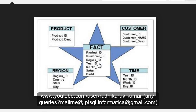The fact table contains all the primary keys of the dimensional tables, and these become foreign keys in the fact table. That is another important point to remember.